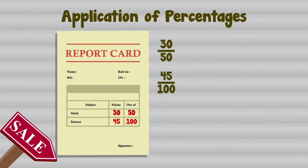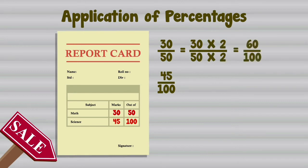Multiply the numerator and denominator by 2. We get 60/100, which is equal to 60 percent.